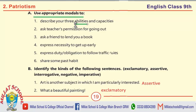You need to describe three abilities. So the sentences would be: I can speak three languages — the modal verb can is used for ability. I can play football — again, can is used. I can drive a car.